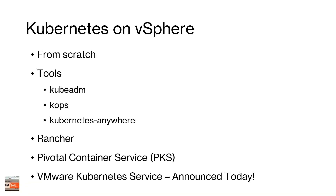I've used Rancher in the past. Last month they announced general availability of Rancher 2.0, which now natively runs Kubernetes as its container scheduling engine. It integrates directly with vSphere and can spin up nodes quickly via vCenter. Pivotal Container Services, or PKS, is where VMware — along with Pivotal and Google — are putting a lot of effort into running an enterprise-grade Kubernetes service on-prem and directly on GCP.